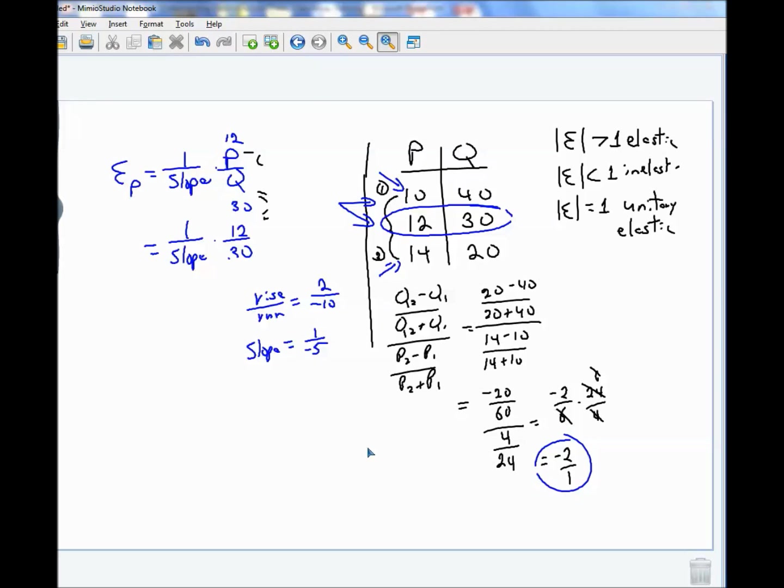Now I'm going to skip a little step here, because what I have is a slope, and what I need is 1 over the slope. Students oftentimes get confused here. Maybe I shouldn't skip this step. But I need 1 over the slope. What I have is a slope. So 1 over the slope, can you see, would be minus 5 over 1. Can you see that? I hope so.